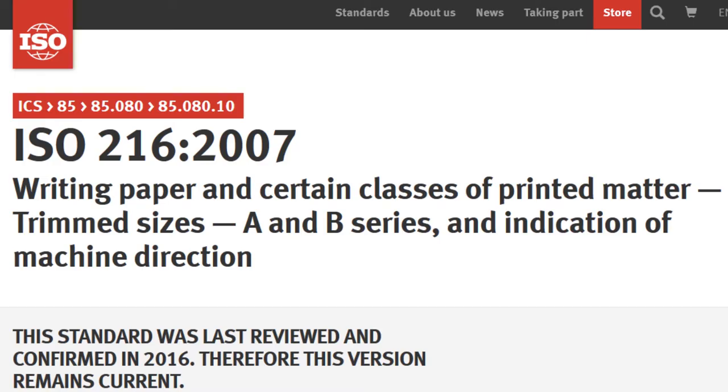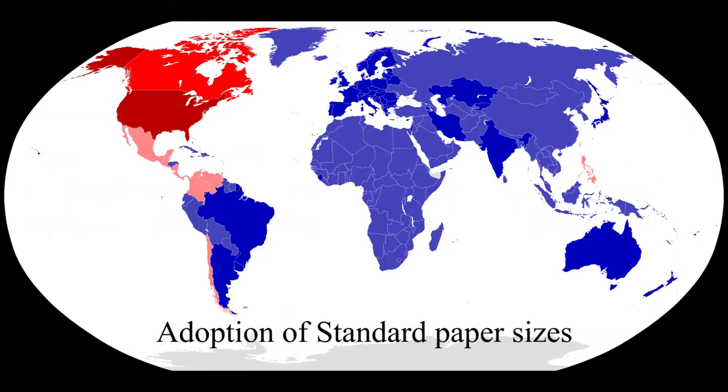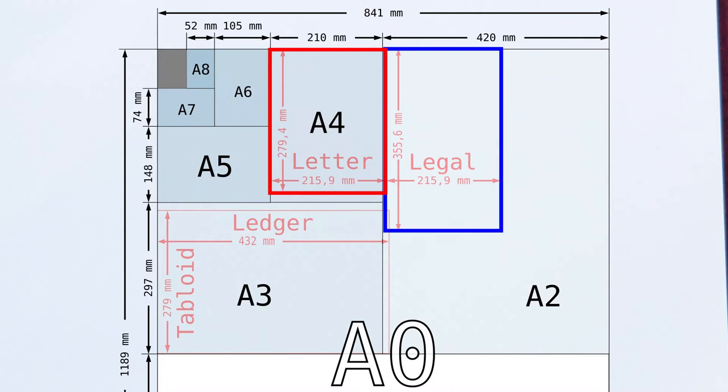ISO 216 is the international standard for paper sizes. The North Americans, of course, chose to go with their own standard of letter, legal, ledger and tabloid paper sizes, which have quite random dimensions. While those do have certain aesthetic looks, they do not hold a candle to the brilliant design of the ISO 216 papers.